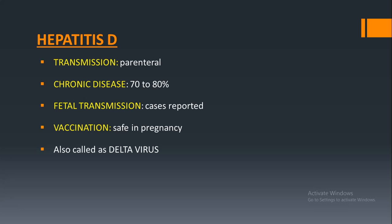Hepatitis D, also called the delta virus: transmission is parenteral, chronic disease occurs in 70 to 80%, and fetal transmission — some cases are reported but mostly rare. Vaccination is also safe in pregnancy in the case of hepatitis D.